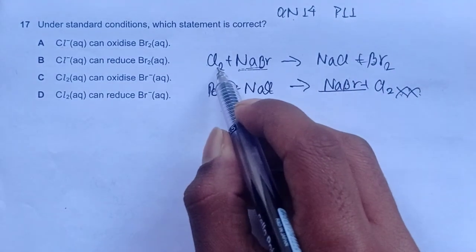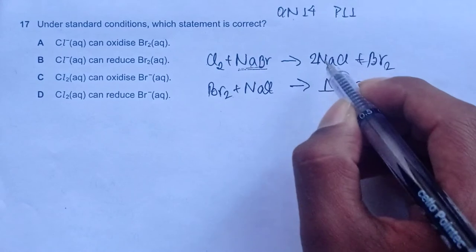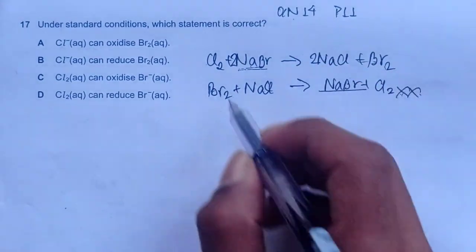Now, we could also balance this, we have 2 chlorine, 2 here, 2 sodium, 2 sodium, everything is balanced.